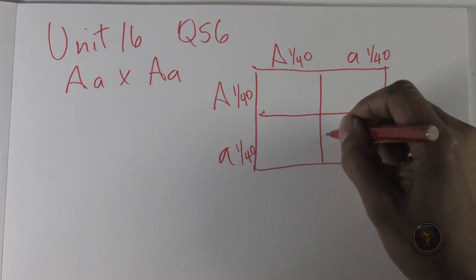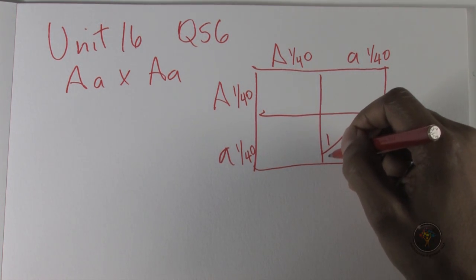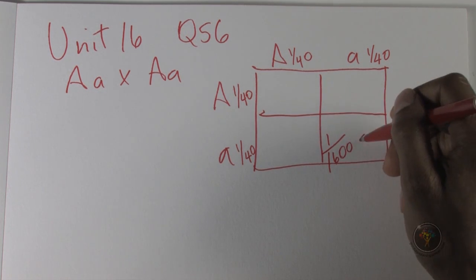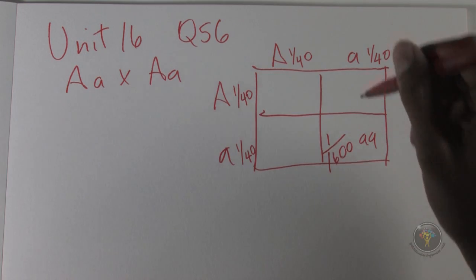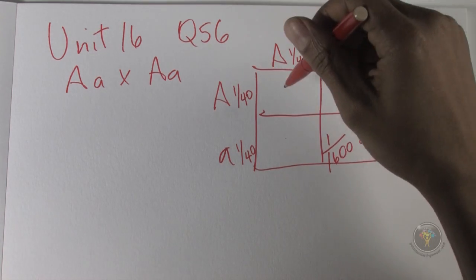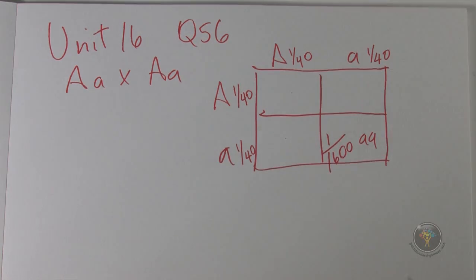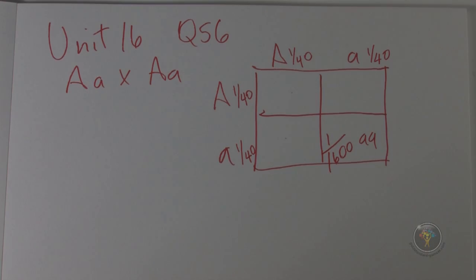So this is how we multiply it. And we have 1 in 1600 for AA. And these would be heterozygous, heterozygous, homozygous but without the condition. But this is what we are looking for.